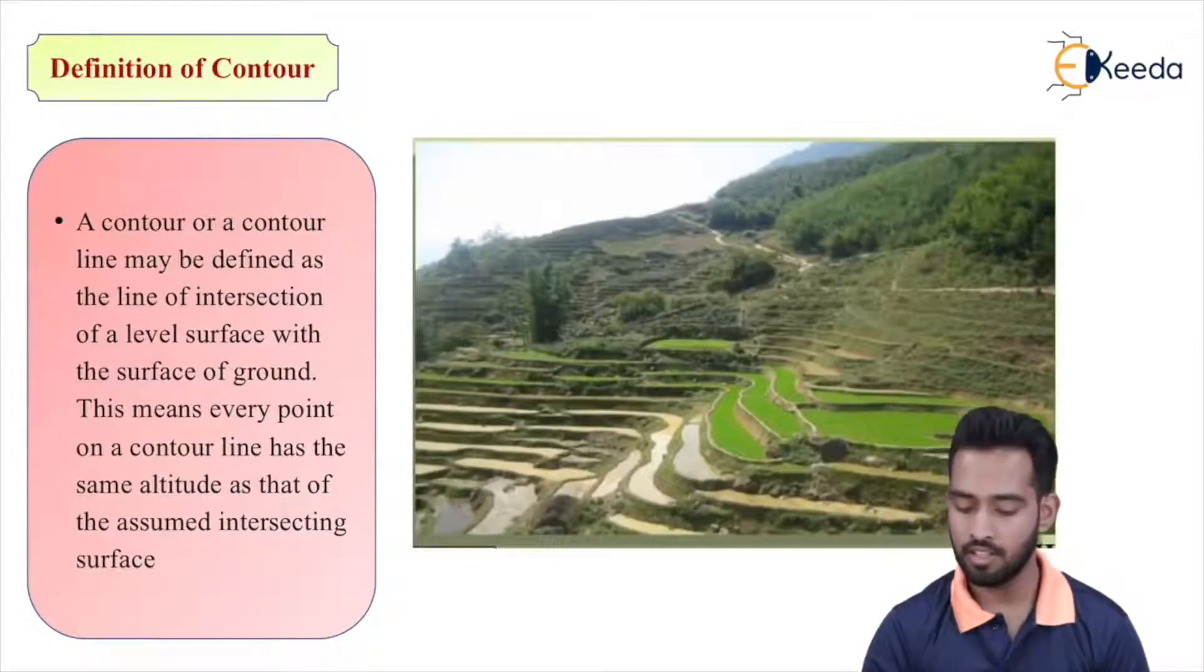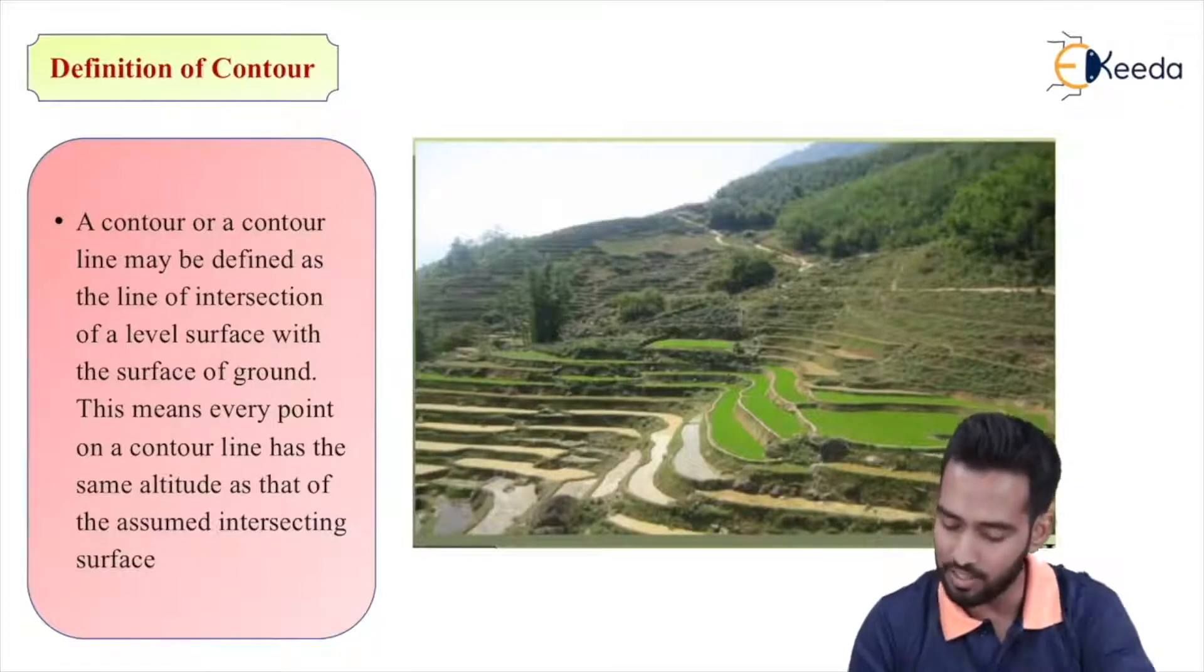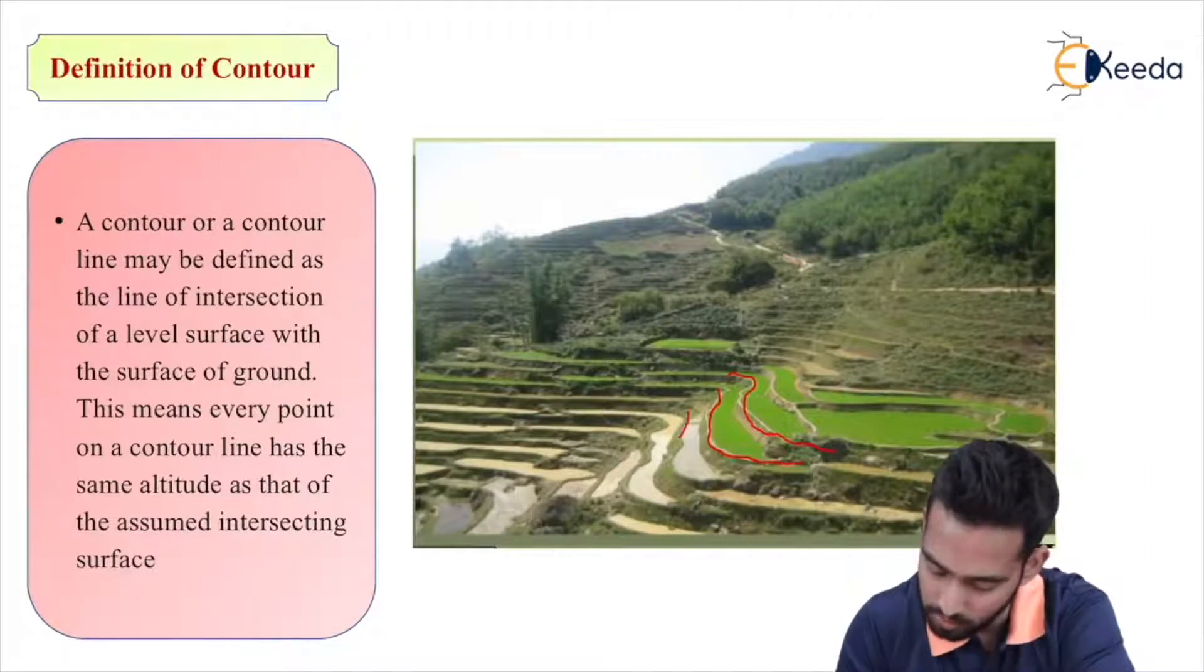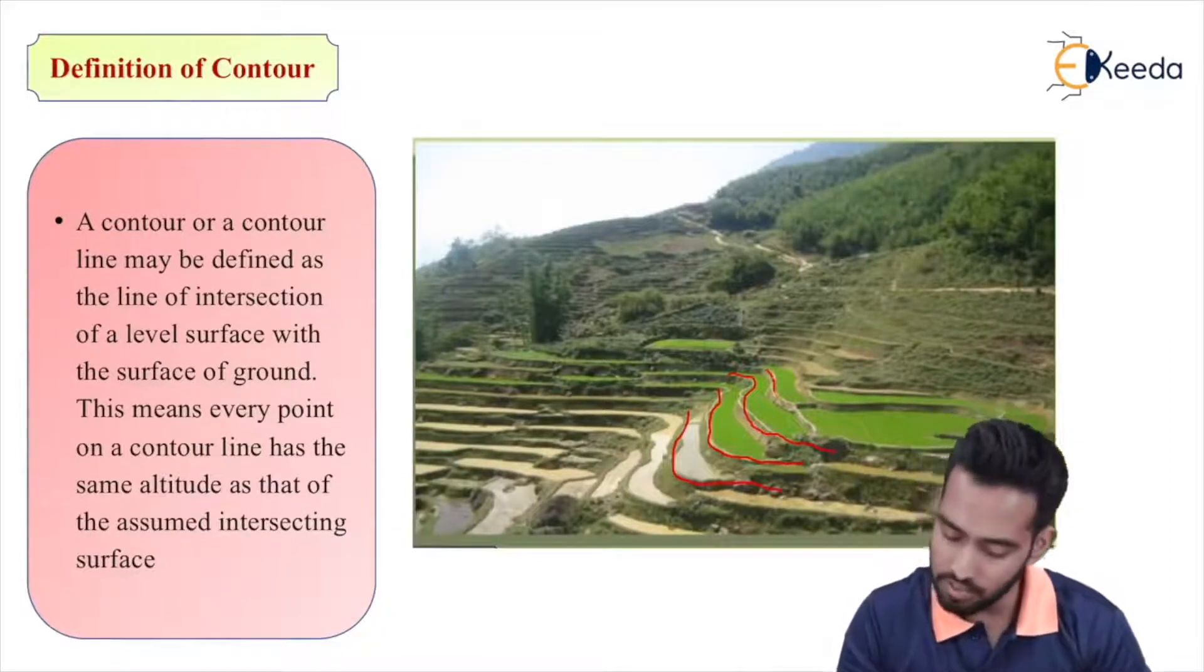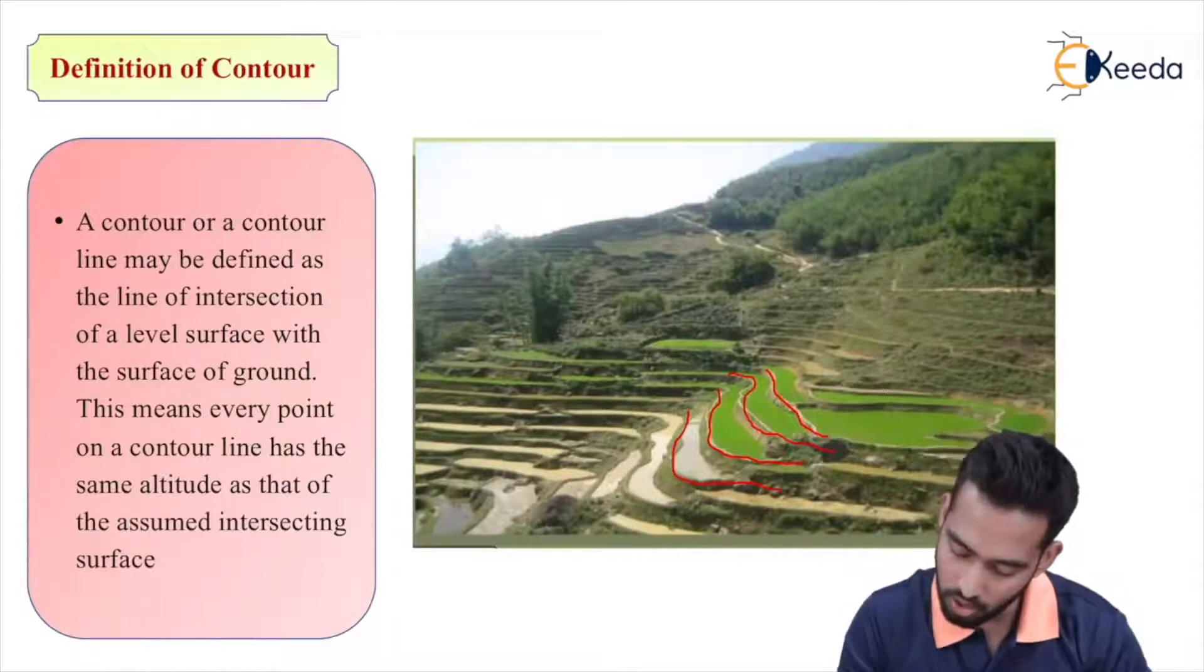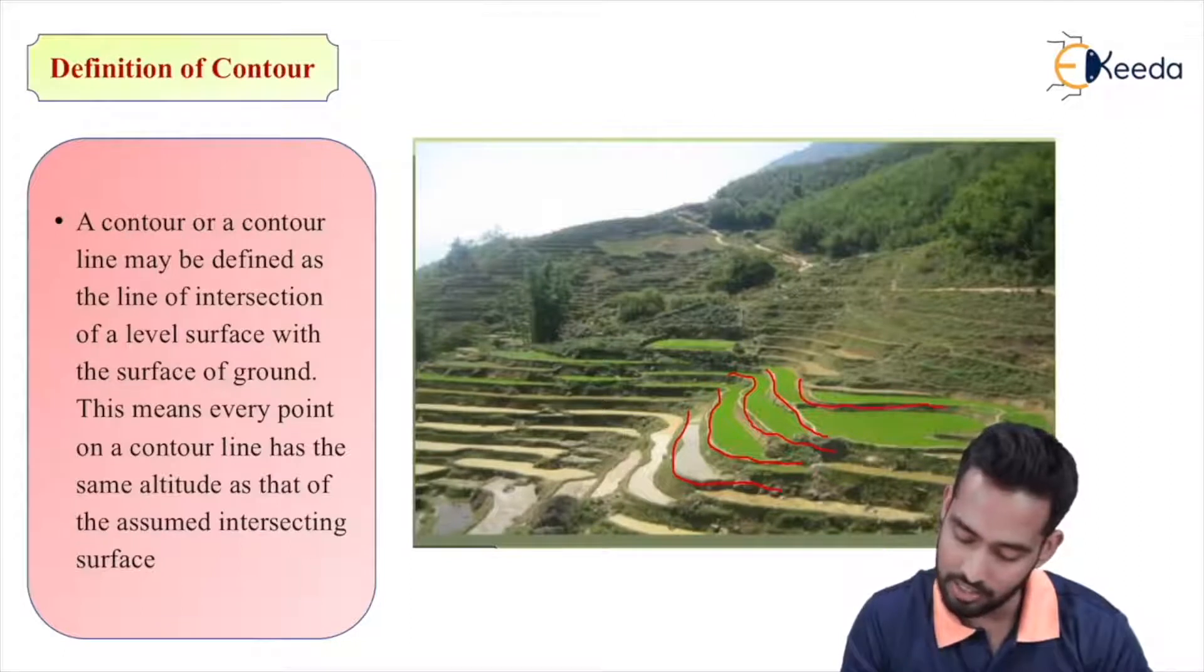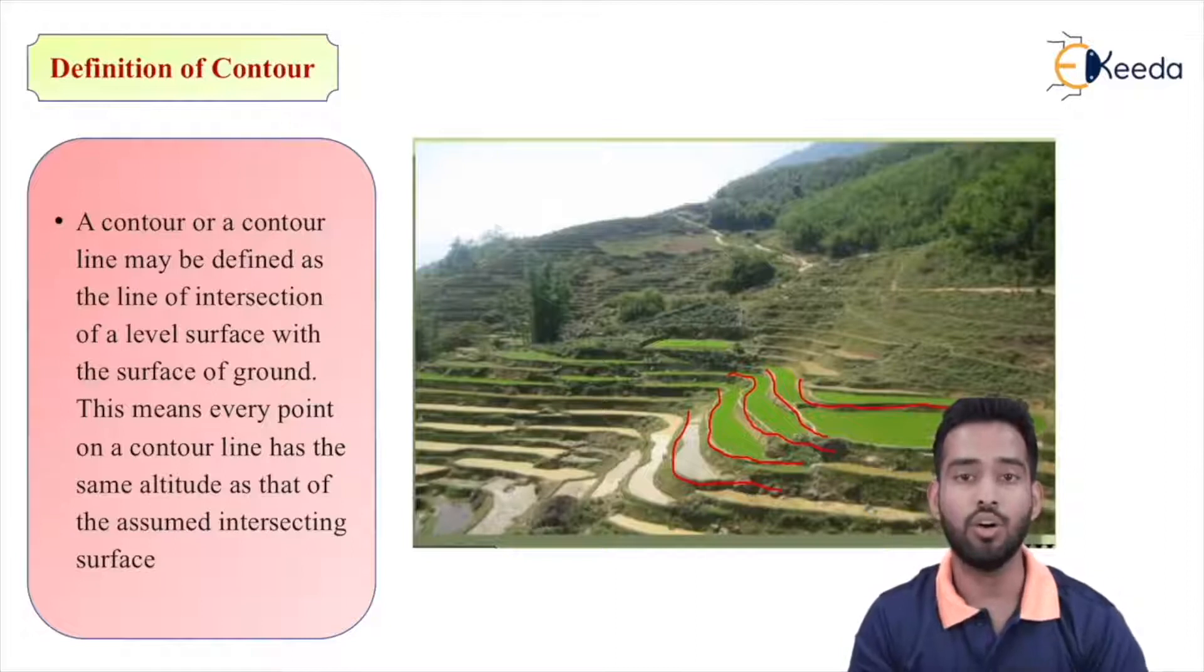The figure explains this very correctly. As we can see over here, this line you are seeing on the ground is nothing but a contour line, because these are the lines which are joining the points of same elevation or same RL. That's why these are known as contour lines.